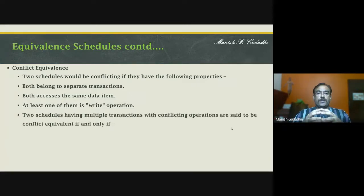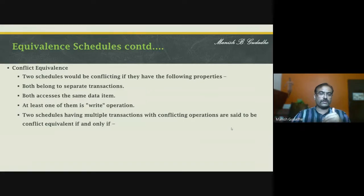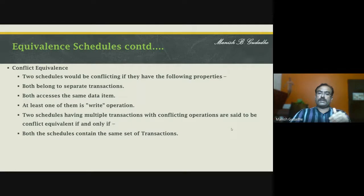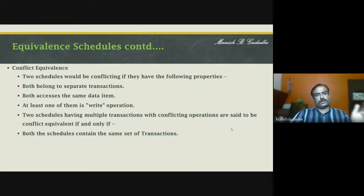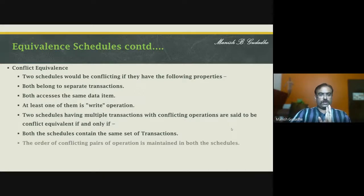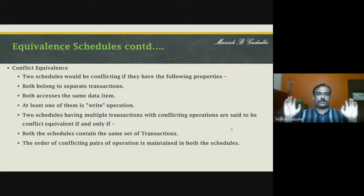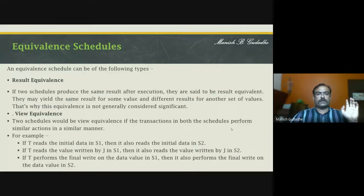Two schedules having multiple transactions with conflicting operations are said to be conflict equivalent. Both schedules must contain the same set of transactions — if S1 is executing T1 and T2, then S2 should also be executing T1 and T2 only. The order of conflicting pairs of operations must be maintained in both schedules.